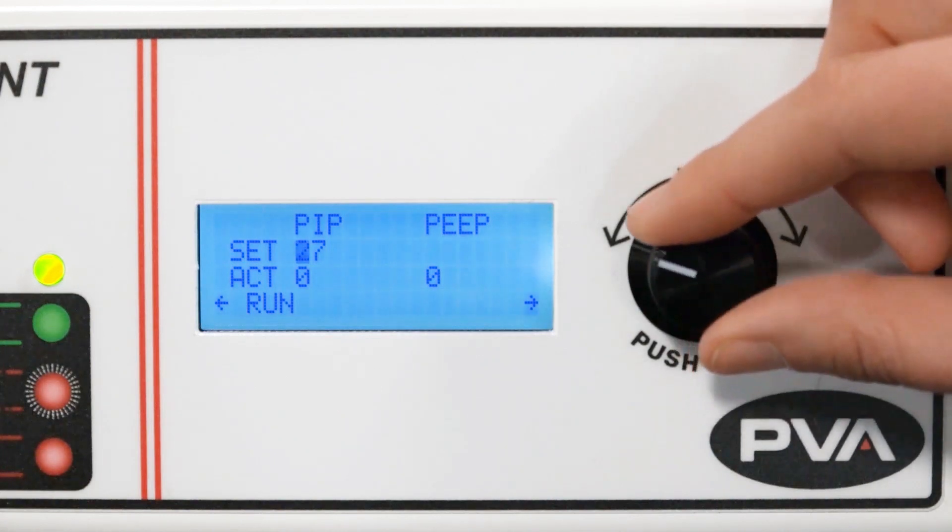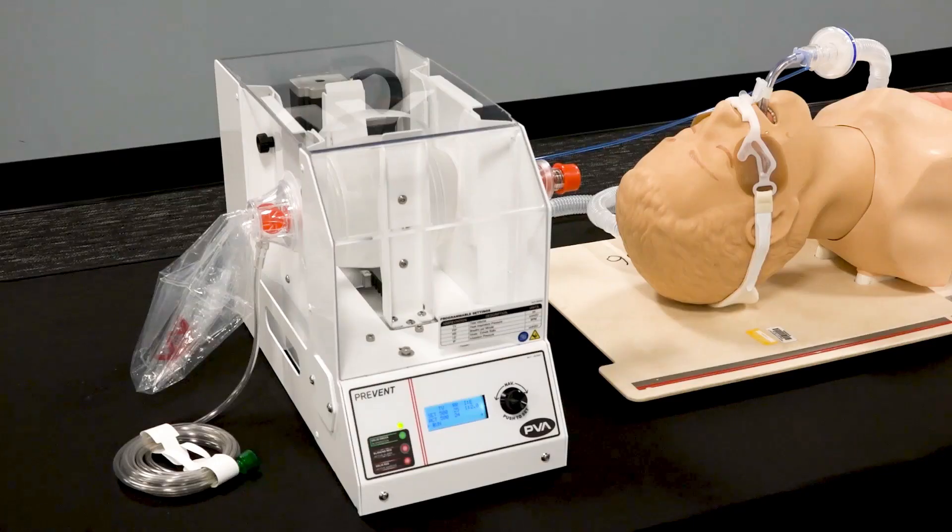To set it, manually adjust the valve to your desired value. Now that the patient is hooked up to Prevent, press run.